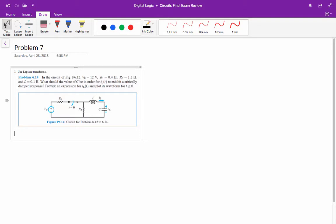We first need to find the value of C in order for iL of t to exhibit a critically damped response, and then we need to provide an expression for iL of t, and then we're going to plot its waveform for t greater than or equal to 0. First, to determine if it is going to be critically damped, overdamped, or underdamped...